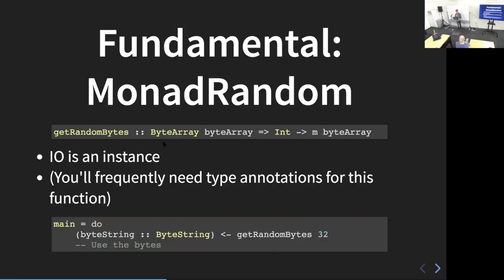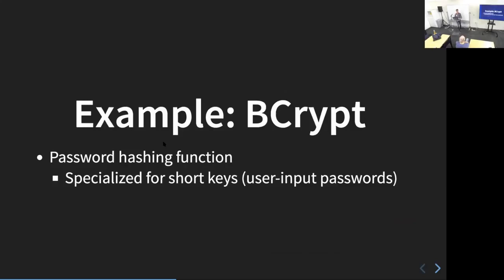That covers the three fundamentals of Kryptonite — they're all pretty simple, and now you'll be able to look at pretty much all the functions in Kryptonite and know how to use them. The first example is bcrypt. Bcrypt is a password hashing function; like all password hashing functions, it's specialized for short keys. The reason you need something like bcrypt, scrypt, or Argon2 is that users' passwords are quite short, unlike a 512-bit key that's totally random.